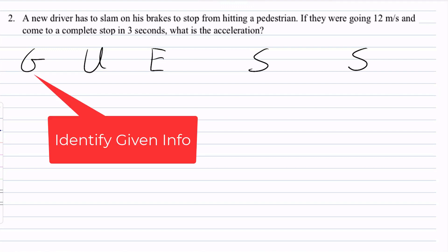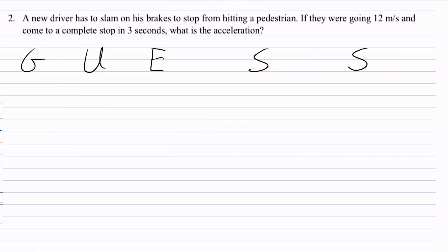Now I'm going to go and identify the information I'm given. A new driver has to slam on his brakes to stop from hitting a pedestrian. If they were going 12 meters per second, and they come to a complete stop in 3 seconds, what is the acceleration? Same idea.